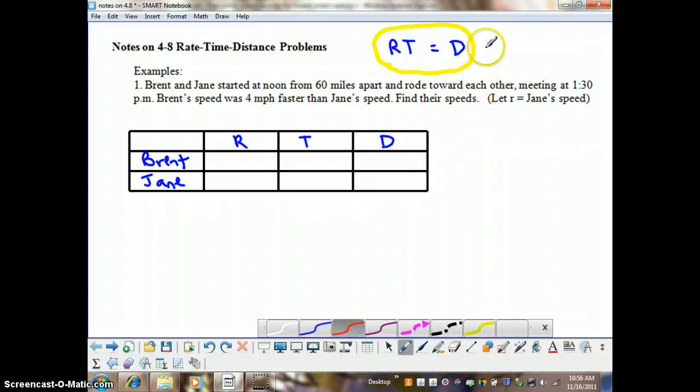if somebody walks at a rate of 5 miles per hour for 2 hours, we know that their total distance would be 10 miles. So, that's what we're talking about here. Rate times time equals distance.